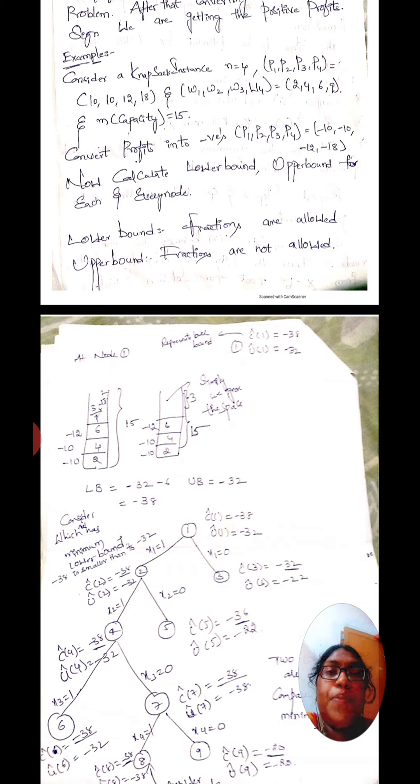Consider a knapsack instance: n is equal to 4. Profits p1, p2, p3, p4 are 10, 10, 12, 18. Weights w1, w2, w3, w4 are 2, 4, 6, 9, and capacity m is equal to 15. We first convert the profits into negatives: p1, p2, p3, p4 equals minus 10, minus 10, minus 12, minus 18.